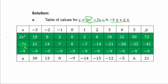Now let's get -7s. When s is -3, you have -7 times -3, that is 21. When s is -1, -7s becomes 7. When s is -2, you have -7s as -7 times 2, that is -14. When s is 5, -7s becomes -7 times 5, that is -35.